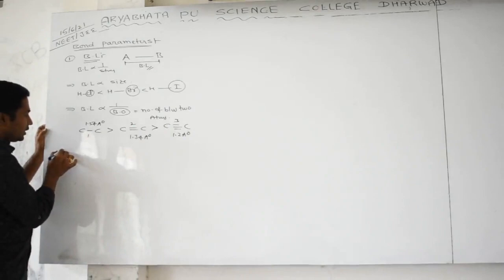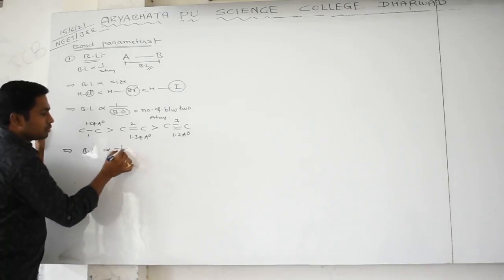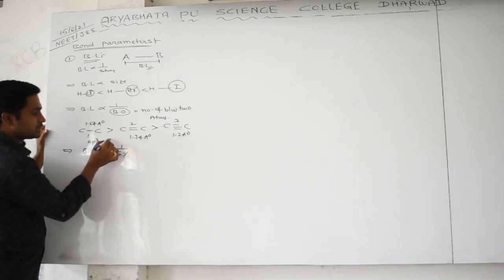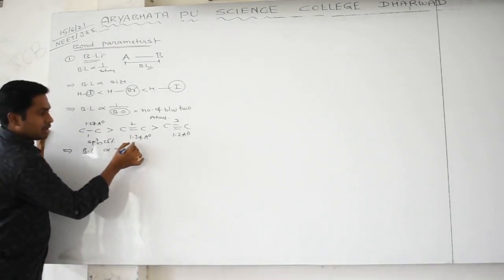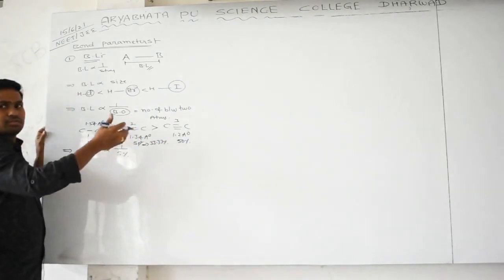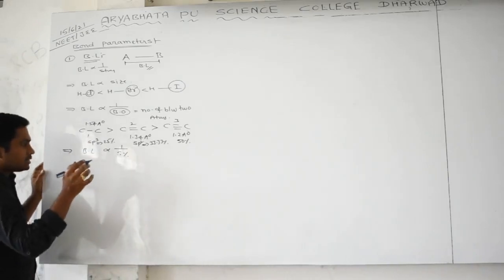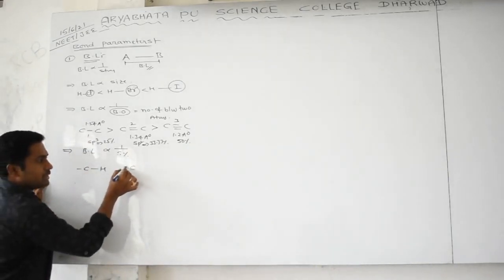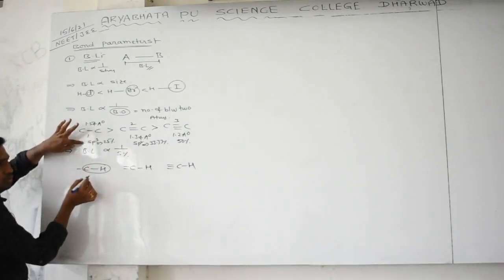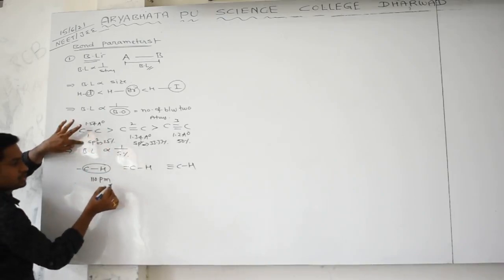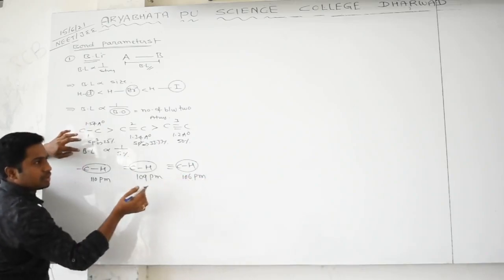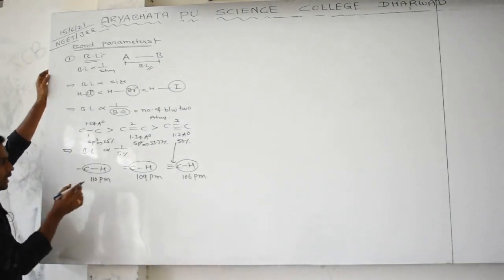Bond length is inversely proportional to s-character percentage. For sp³ hybridization, s-character is 25%; for sp² hybridization, s-character is 33.33%; for sp hybridization, s-character is 50%. More s-character means less bond length. In alkanes, alkenes, and alkynes, the C–H bond lengths are 110, 109, and 106 picometers respectively, reflecting increasing s-character.